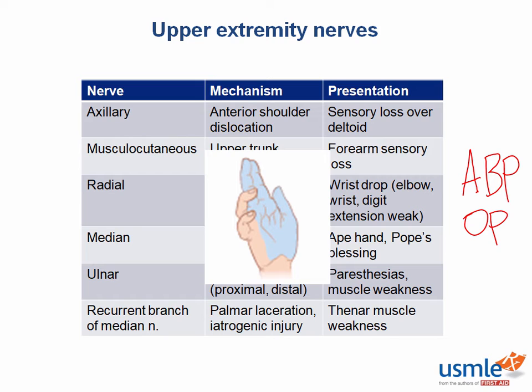Another condition is Pope's blessing, which occurs with a more proximal median nerve lesion such as a supracondylar humerus fracture. It results in the inability to flex the index and middle fingers while trying to make a fist. The exam stem will often describe a patient attempting a movement and show an image of the result. To fully flex the index and middle fingers, the patient needs the flexor digitorum profundus, which receives innervation proximally from median nerve branches. If the median nerve is injured more proximally, it cannot innervate the FDP to the index and long finger, and during a fist movement, the first and second fingers remain extended.